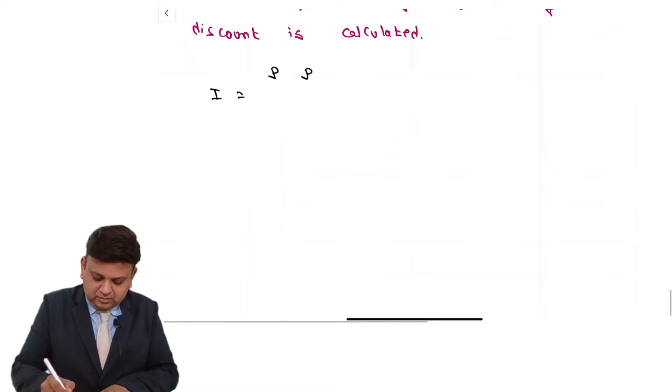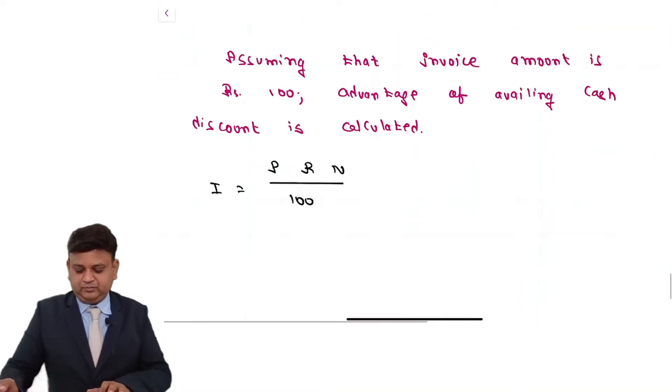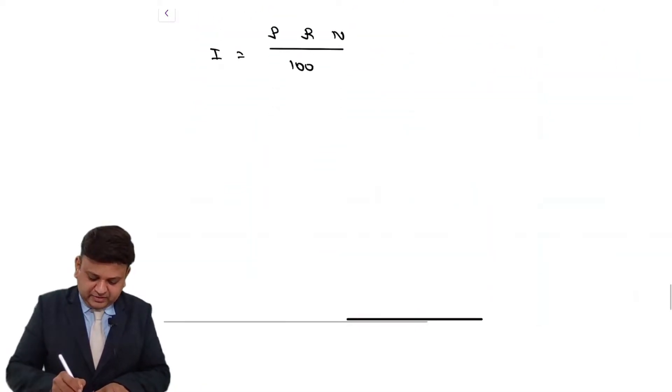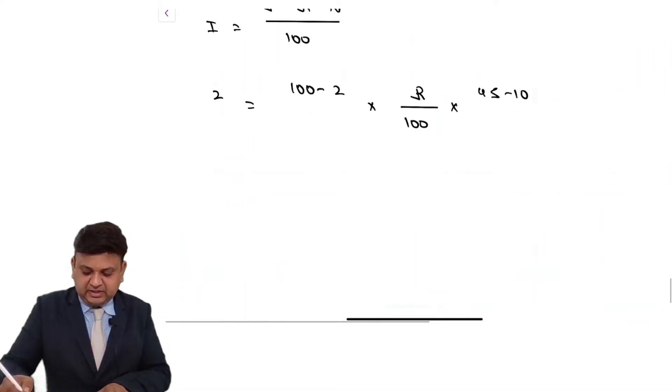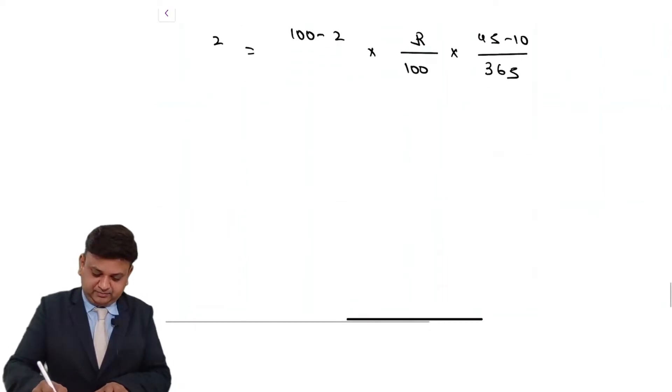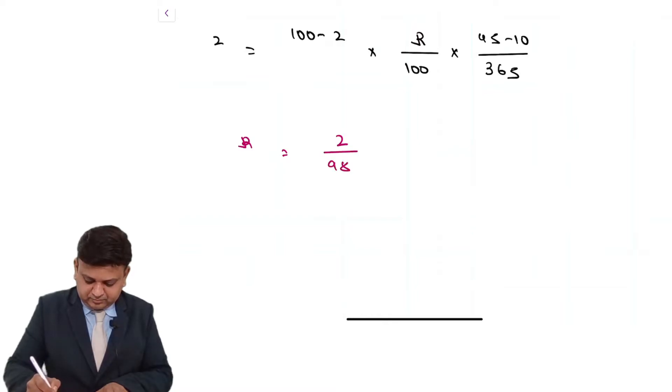I is equal to PRN upon 100. Here we have paid Rs. 98 instead of Rs. 100, it is better than 2%, that is Rs. 2. Now R will be found. R is equal to 2 upon 98 into 100 into 365 divided by 35.